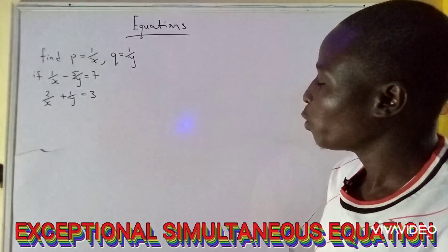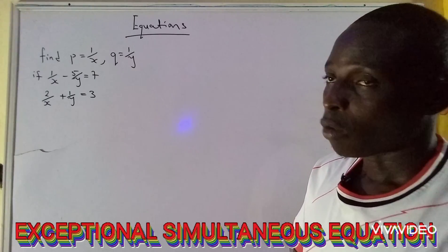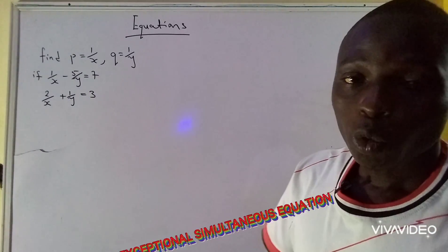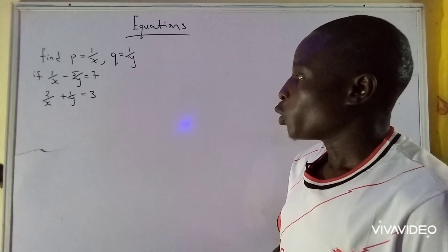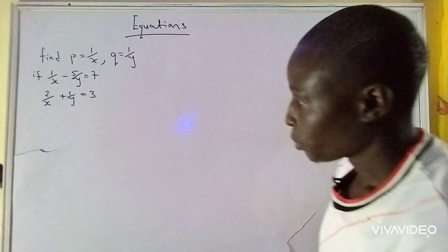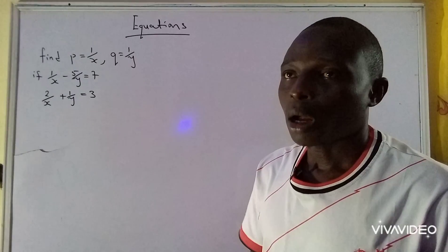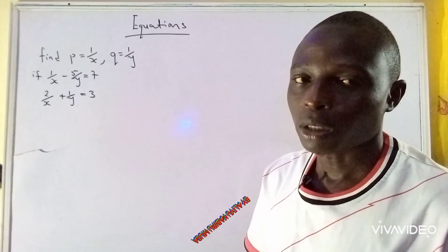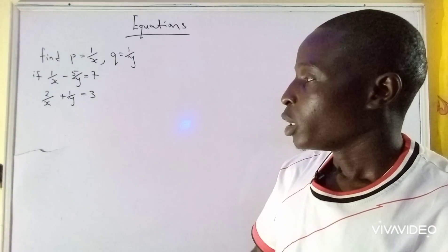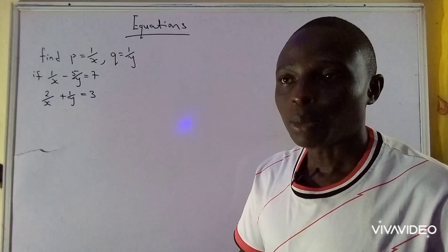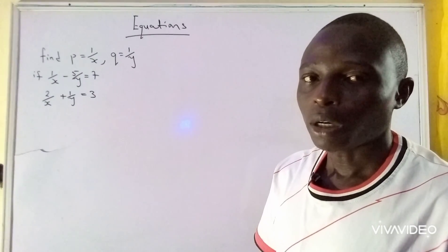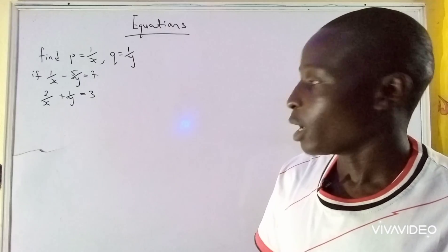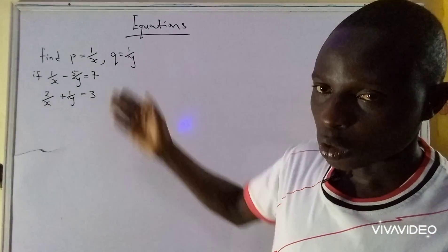P equals 1 over X and Q equals 1 over Y, if 1 over X minus 5 over Y equals 7, and the second equation says 2 over X plus 1 over Y equals 3. One of the most important things in mathematics is that when a question is given to you, you need to understand the question first, then know the concept or approach to follow to get to the final answer.